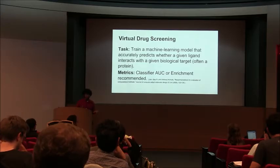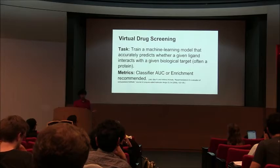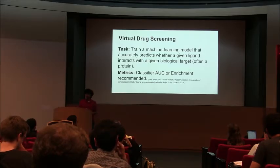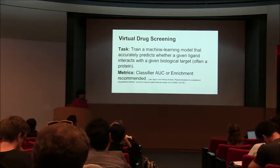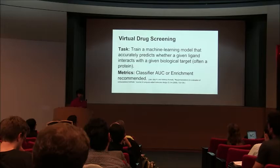The idea is that you have some assay you use to study some system. You have some collection of data points from this assay, and given this collection, you want to build a model of what else is going to be active in that assay. This has been approached by virtual screening for quite some time, using simple machine learning methods. The insight was: instead of simple machine learning, why don't we try deep learning?